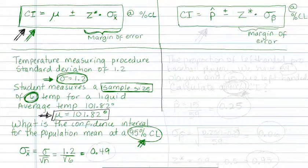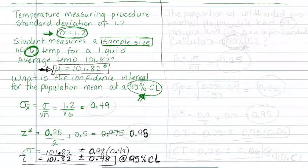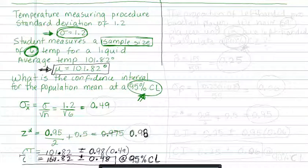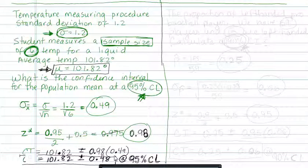Times sigma sub x-bar, which we calculated to be 0.49. So we multiply those two: 0.98 times 0.49 gives you 0.48, and this is the confidence interval, this is the range at 95% confidence level, and that is what you report as the answer.